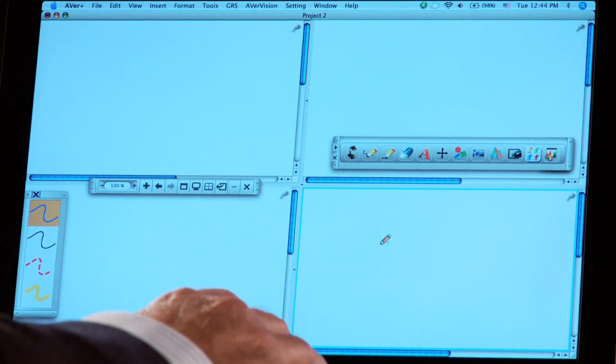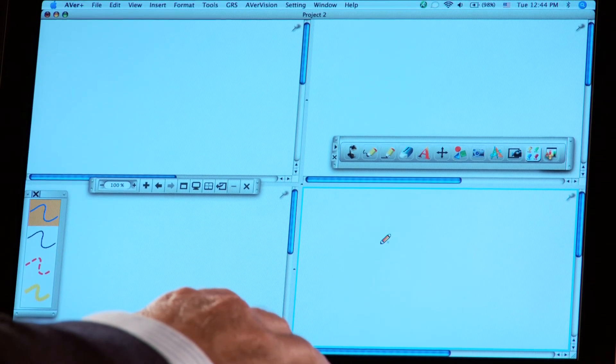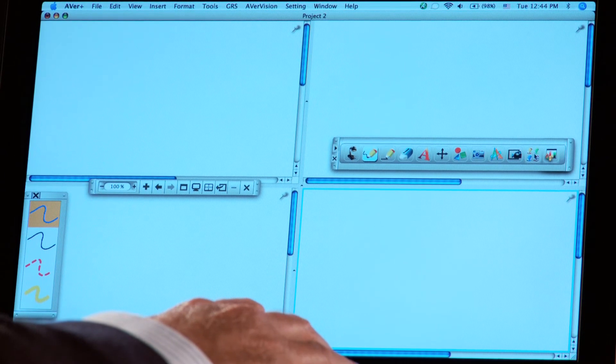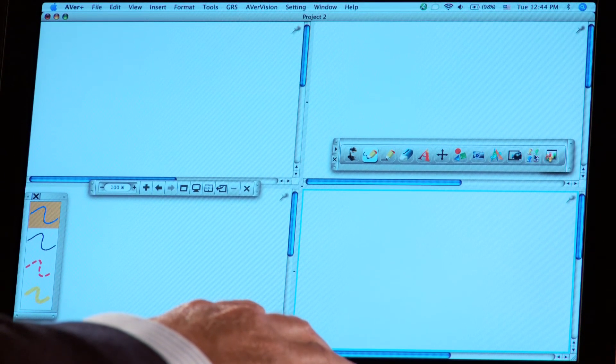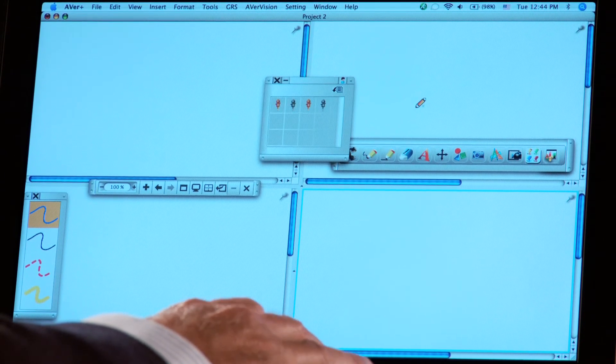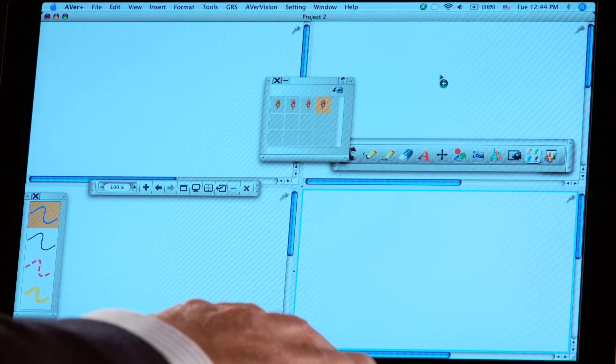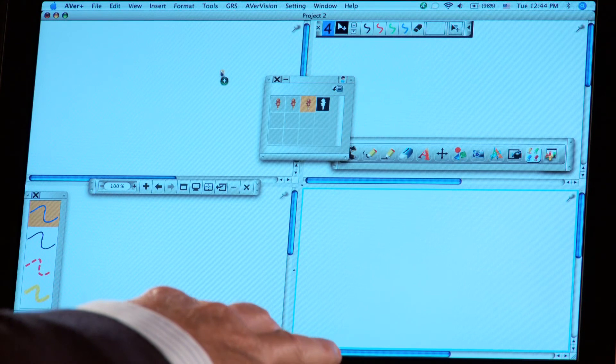The teacher decides which screen the student has access to, but the teacher has access to all. Now that you have split screens, all you have to do is drag the students to where they can participate.